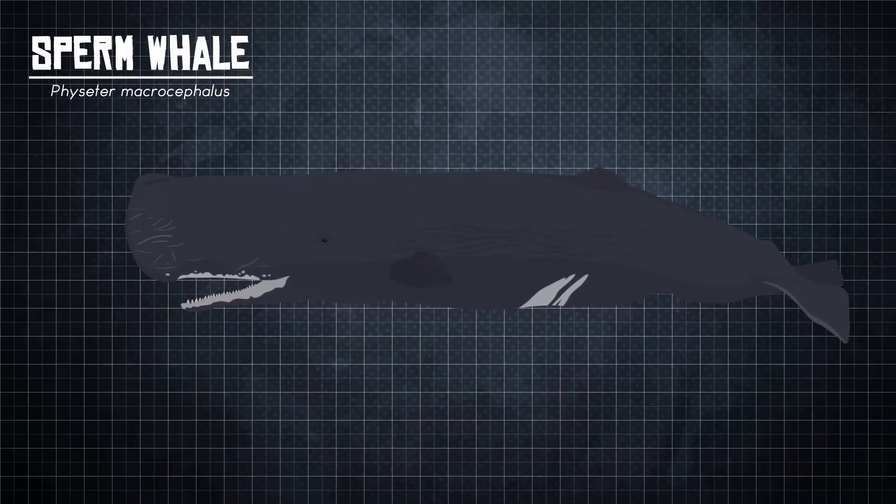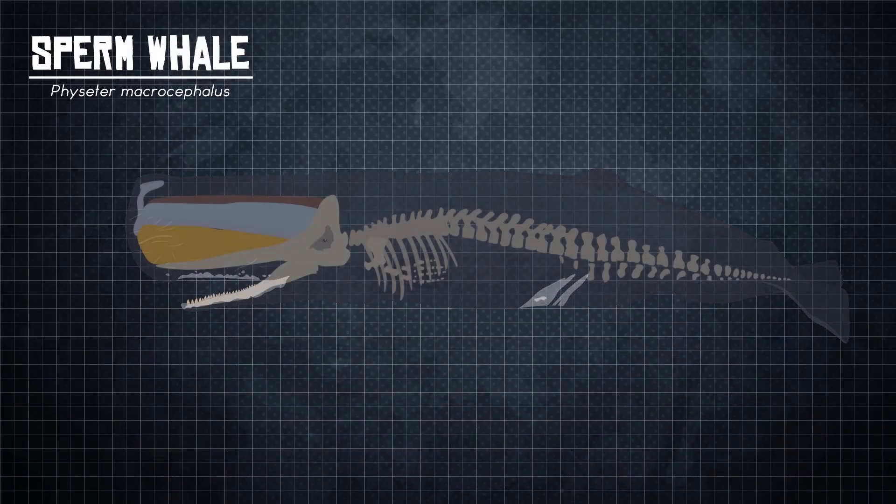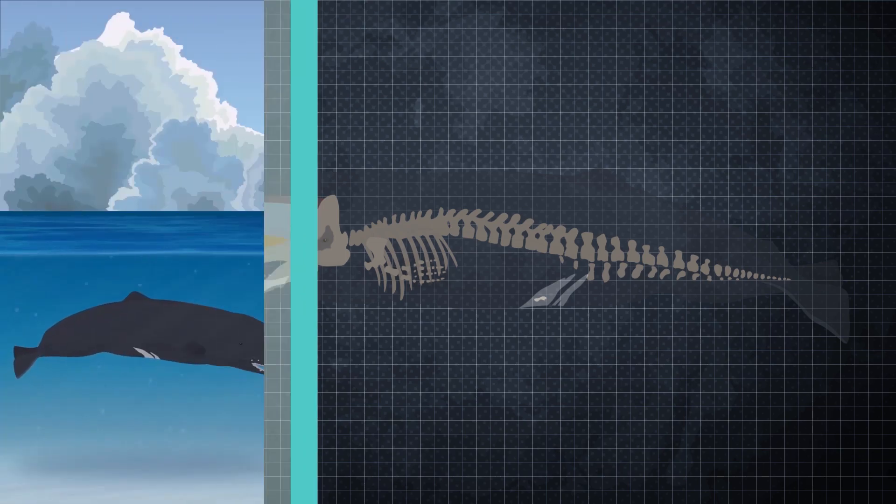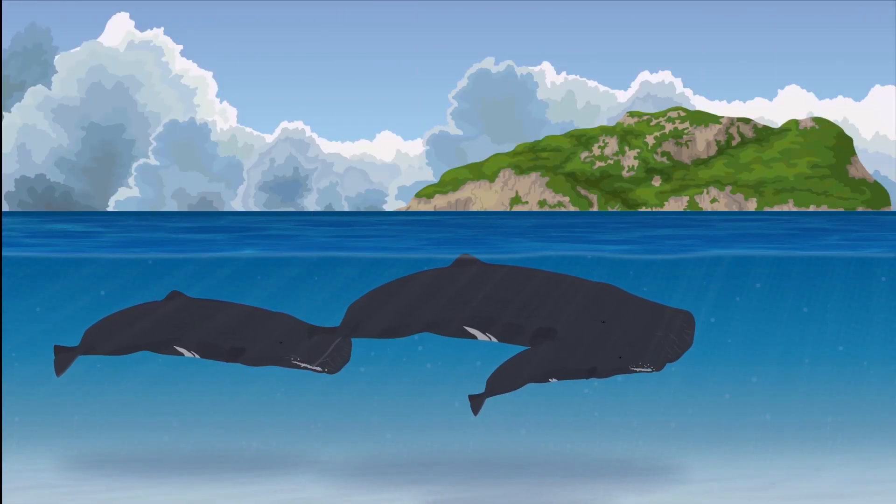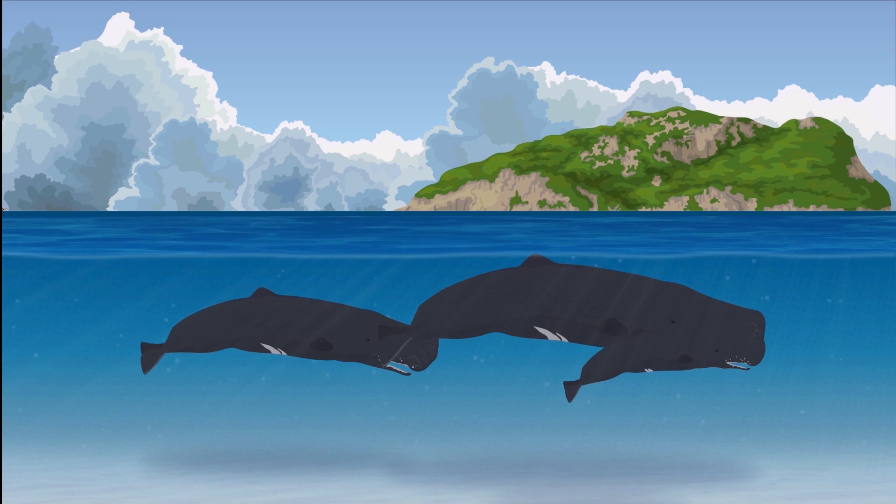The name sperm whale comes from a waxy white substance found in the spermaceti organ located inside of a sperm whale's head. Early whalers mistook this liquid as the animal's semen and thus the name spermaceti oil came about.